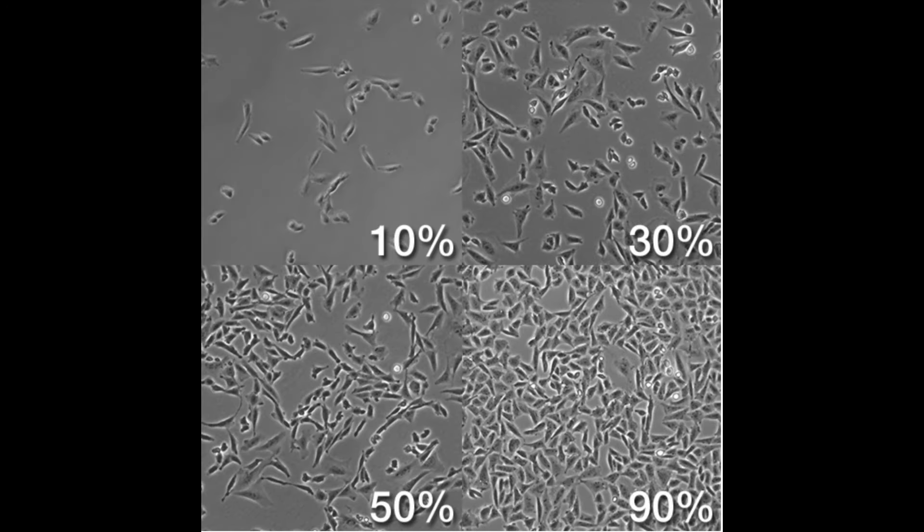Today, we will learn about passaging our cells. This is also known as subculturing or the transfer of cells from a previous culture into fresh growth medium to allow the cell line to further grow. Adherent cells should be passaged when the cells become semi-confluent. Confluence refers to the percentage of the surface that is covered by adherent cells. A 50% confluence means that the cells are covering half of the entire surface of the plate.